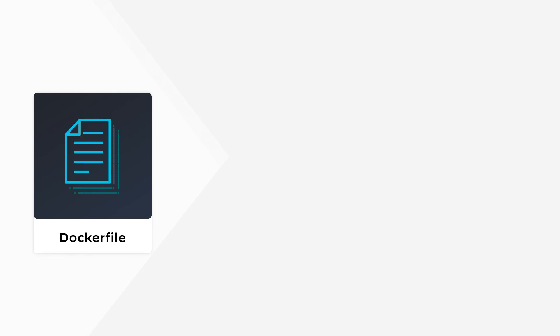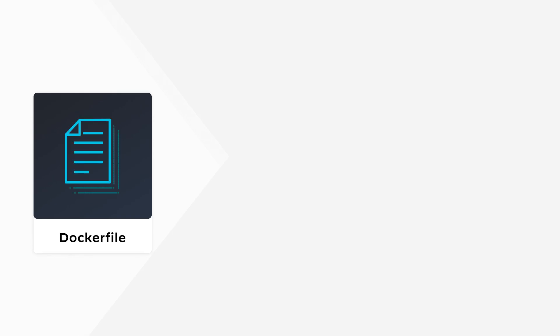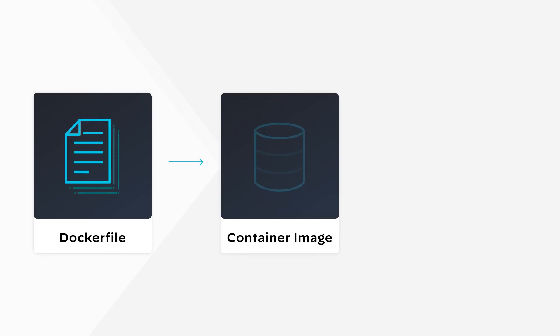First, you start with a text file that humans can actually read — this is the Docker file. The Docker file has all of the steps needed to create your application. It may need to pull in some code or install some libraries, but in the end it controls which processes to run or ports to listen on. Then this text file is built into a container image — a static file or multiple static files on a disk that holds the code and metadata needed to run processes or an application.